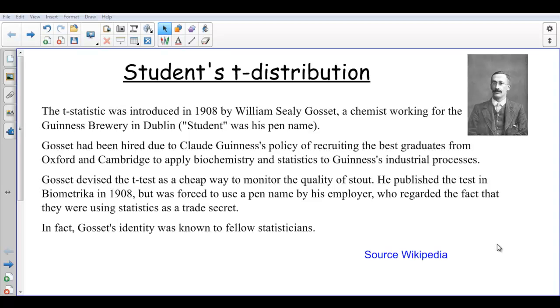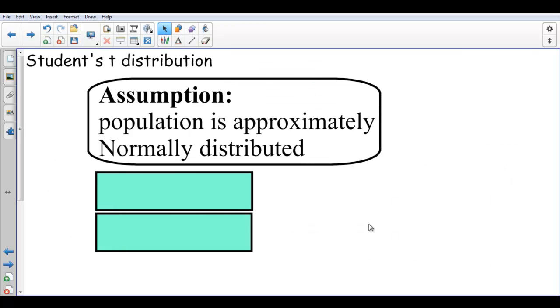Because the brewery didn't want their secrets well known to everybody, Gossett published this under the pen name of Student, and that's why it's called Student's t-distribution. Let's have a look at how it works and what we do with it.